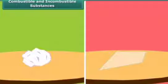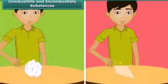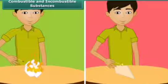There are two types of substances. Some substances catch fire and burn while the other group does not catch fire. As you can see, the boy is bringing a lighted matchstick close to the paper and glass.